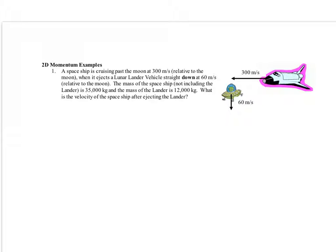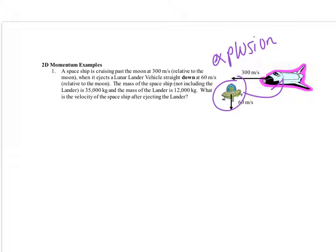Here's the first example: a spaceship is cruising past the moon at 300 meters per second relative to the moon when it ejects a lunar lander vehicle straight down at 60 meters per second relative to the moon. The mass of the spaceship, not including the lander, is 35,000 kilograms, and the mass of the lander is 12,000 kilograms. Our diagram shows — if you want to call it a collision — this is actually an explosion, because they start with the same velocity and then have two different velocities after. The lander starts inside the spaceship — that's state A.